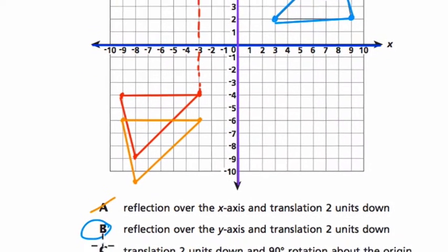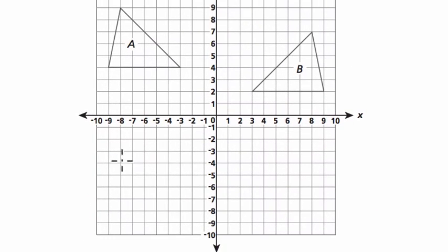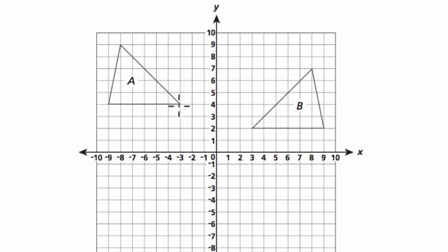But just for fun, let's look at C so we can make sense of what that might look like, right? So let me just clear some of this off. Okay. So we know the answer is B, but let's just look at what C would look like. A translation two units down.